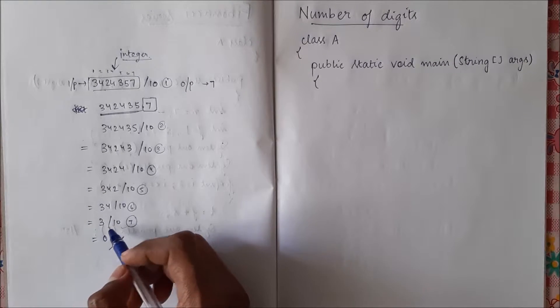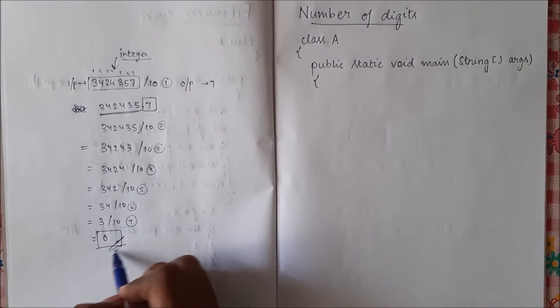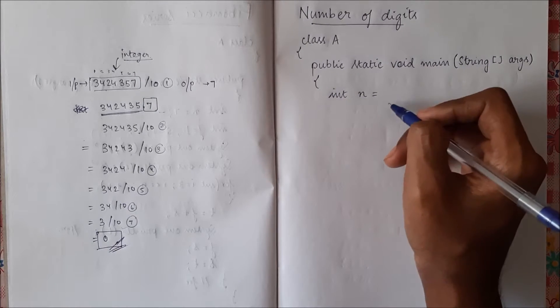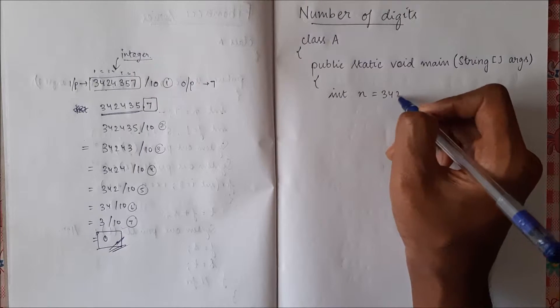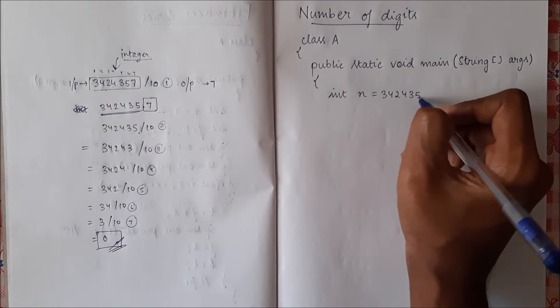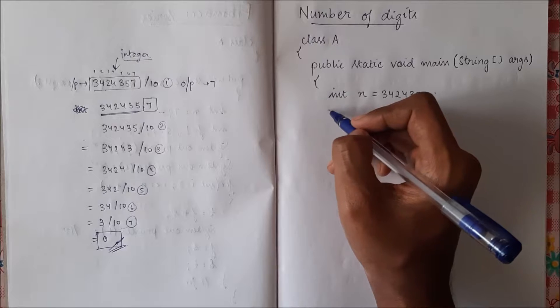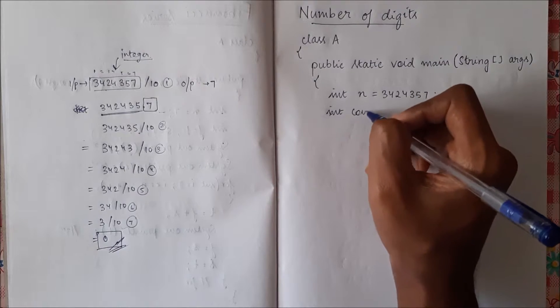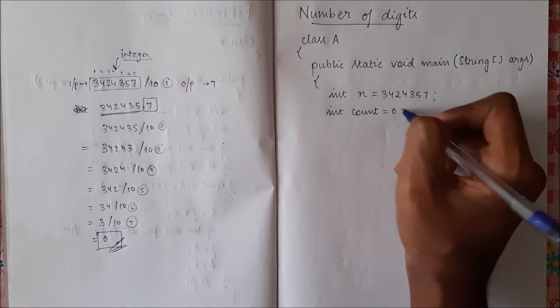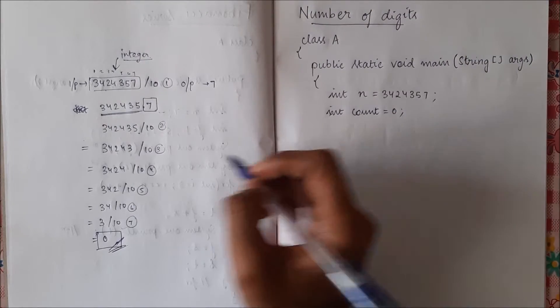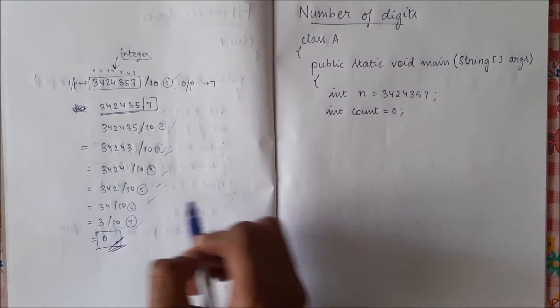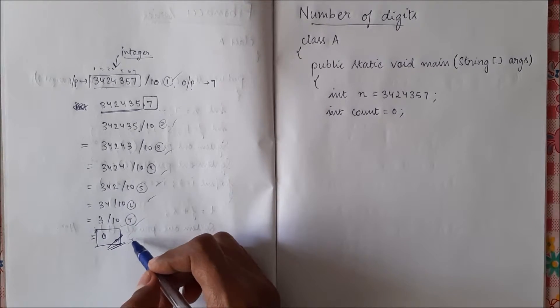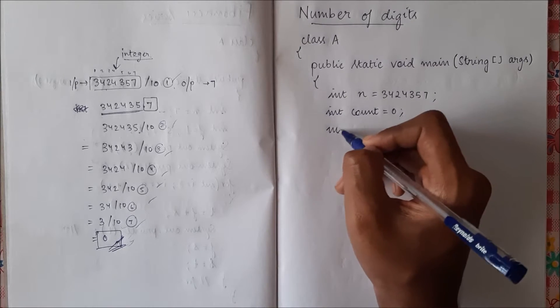So let us see how to do it. When should we end our loop? When our result becomes 0. So let me first create a variable called n, our n will have the input value. Let us create one more variable count which is initially 0, and we will use this variable to count how many digits we have. Now with this base condition we will write a while loop.